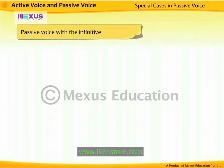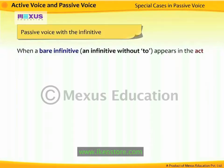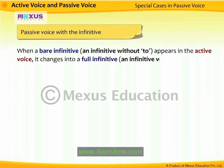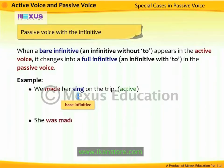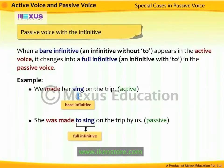Passive voice with the infinitive: when a bare infinitive (an infinitive without 'to') appears in the active voice, it changes to a full infinitive (an infinitive with 'to') in the passive voice. For example, 'We made her sing on the trip' — 'sing' is the bare infinitive. When transformed into passive voice, it becomes 'She was made to sing on the trip by us.' The bare infinitive 'sing' changes to the full infinitive 'to sing.'